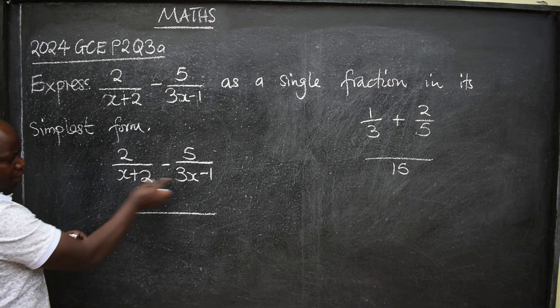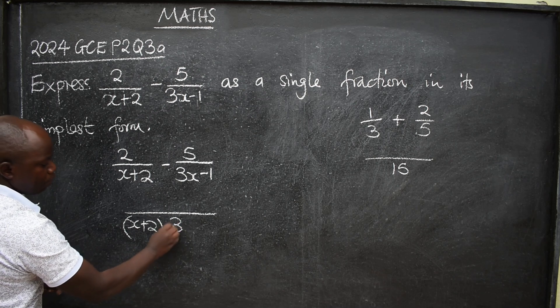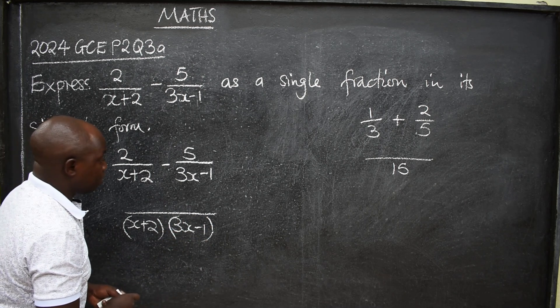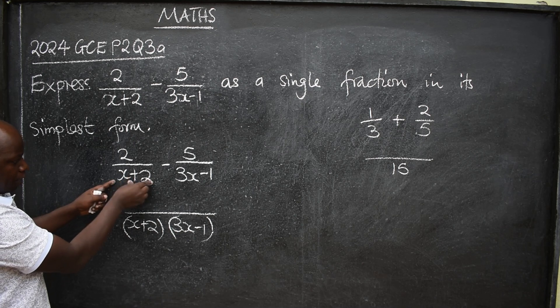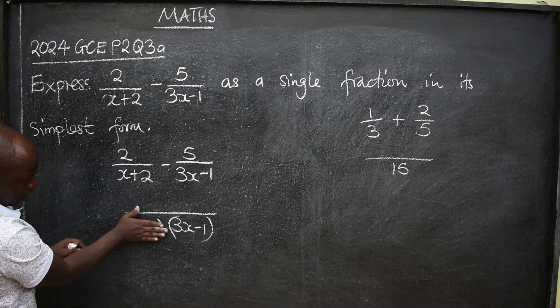So you multiply this times this. You just write x plus 2 here. Then the other pair will be 3x minus 1, like this. Okay? You start dividing. This x plus 2 into this whole thing. It's like you've covered these two.